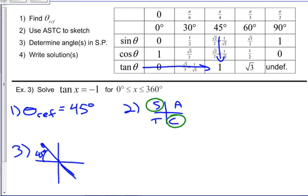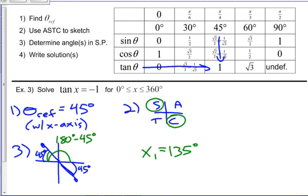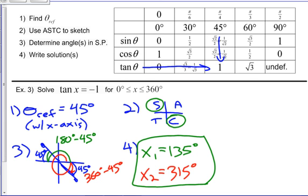So now that I know my theta ref and what quadrants I'm in, I'm just going to draw the appropriate angles. And theta ref is always measured with the x-axis. How are we going to figure out those angles in standard position? Well that first one is like 180 but minus 45, and when you get comfortable you'll just be doing that in your head, and that's 135 degrees. Angle two would be like 360 but minus 45, so x2 is 315 degrees. And if you check that in your calculator, those are both going to give you a tangent of negative one. So we found the angles that satisfy the equation.